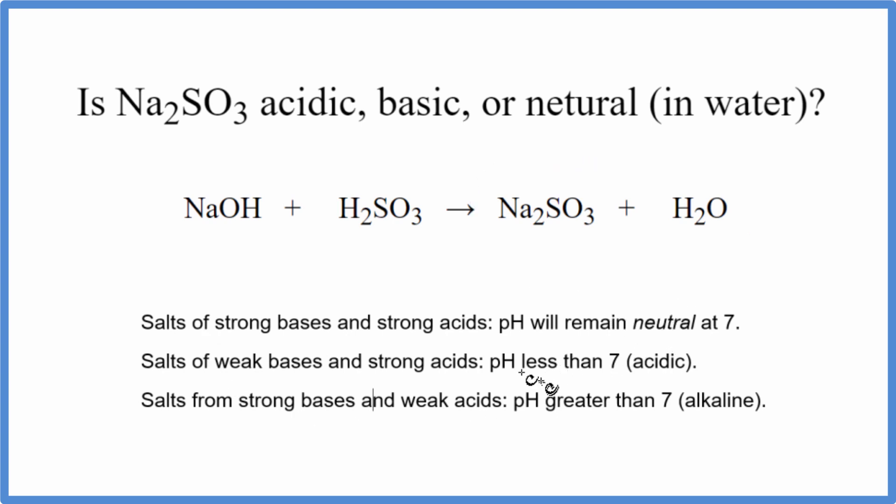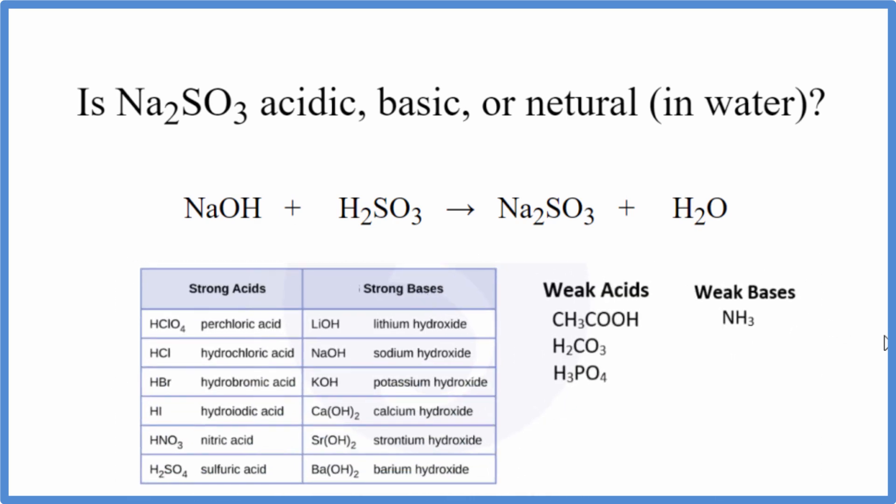To figure it out with these rules, we need to know the strength of the base and the acid. This table will help us do that, not a bad one to memorize. So we have sodium hydroxide right here, that's a strong base. Write SB above that.